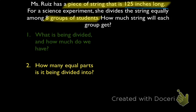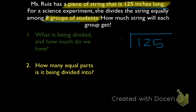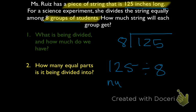We're splitting the string among eight groups of people, so our division problem is going to be 125 divided by 8. If we write that as a regular division problem, 125 is our dividend and also our numerator, and 8 is our divisor, or our denominator.